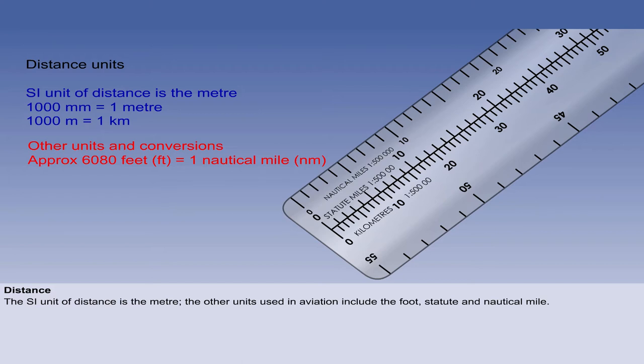You must memorise that there are 6080 feet in one nautical mile, 5280 feet in one statute mile and 3.28 feet in one metre, together with the other probably more familiar conversions shown.